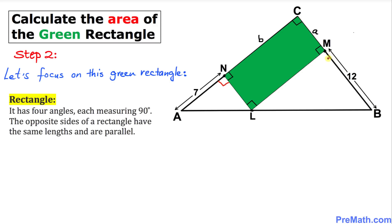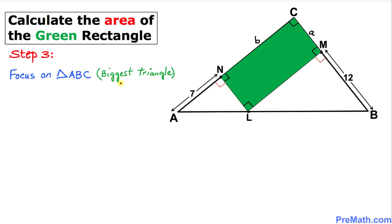In this next step, let's focus on the big triangle ABC. We know that this angle is 90 degrees at point C. Let me call this angle alpha at point A and this angle beta on this side. We know that the sum of all three angles must be 180 degrees, and since this angle is 90 degrees, that means alpha and beta are complementary angles.